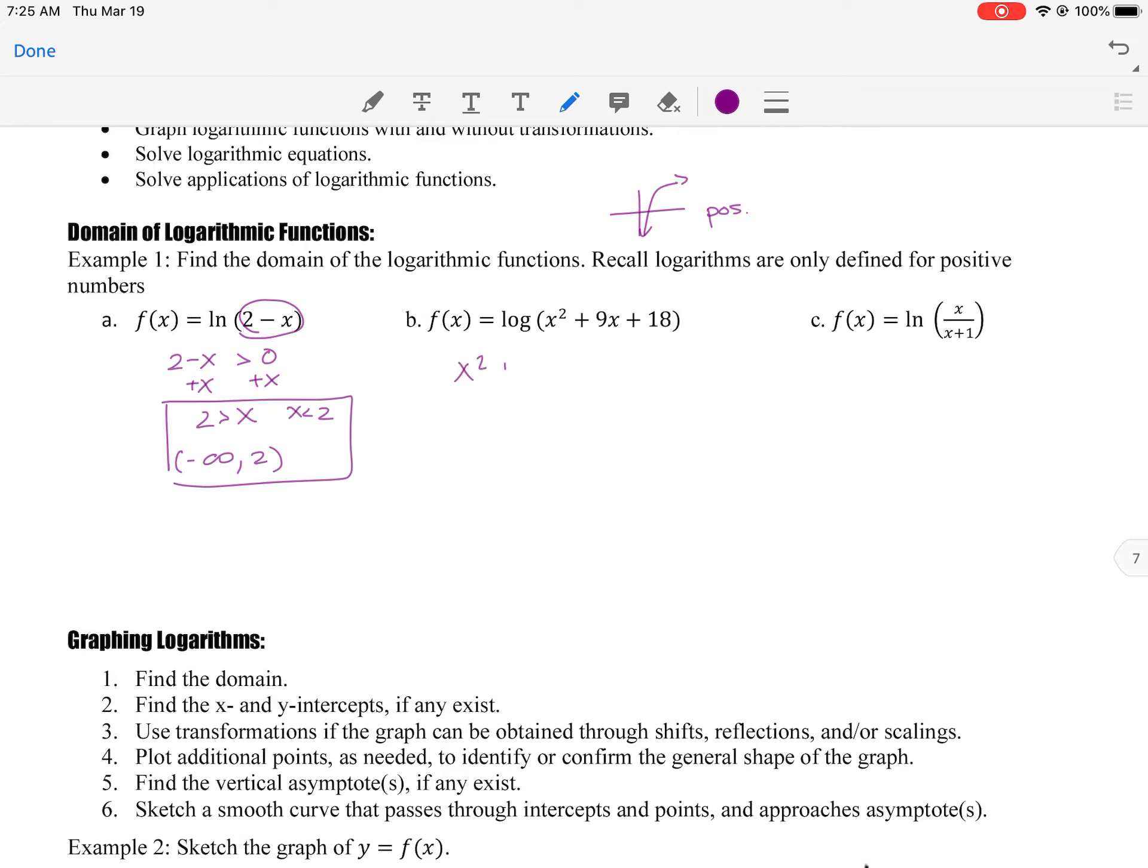Okay, for this next one, we're setting x squared plus 9x plus 18 is greater than zero. So you want to ask yourself, what multiplies to 18 that adds to 9? As you think about that, the two answers are 6 and 3. So as you solve those, you would get x equals negative 6 and negative 3.